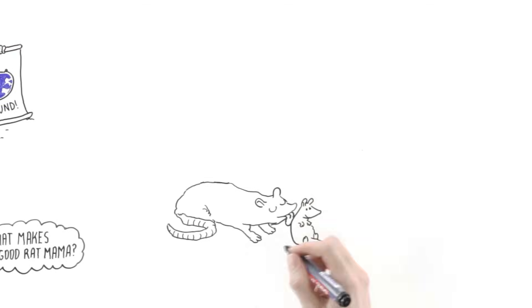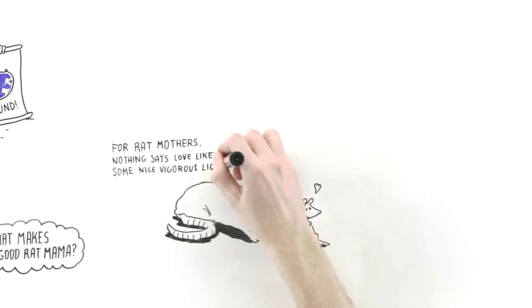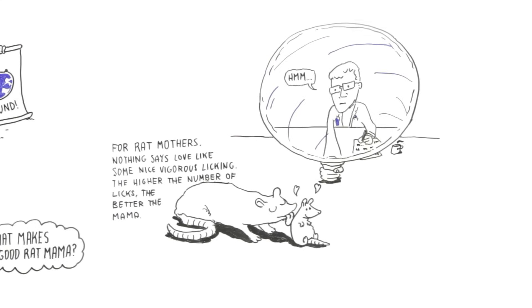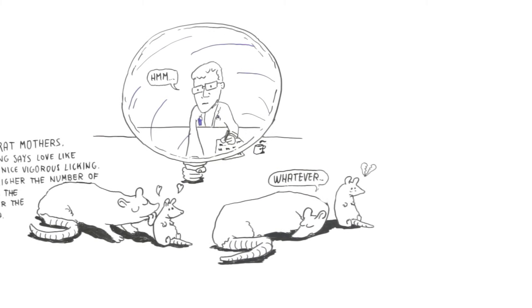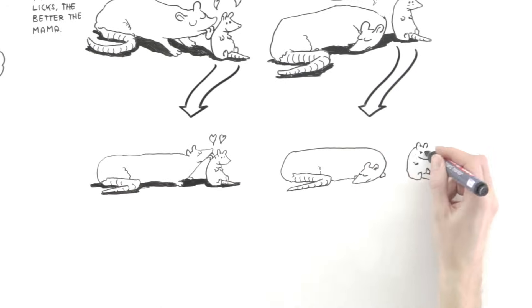Well, for a rat mother, nothing says love and care like some nice, vigorous licking. The higher the number of licks, the more love and the better the mama. With this in mind, the researchers compared two groups of rat mothers. One that licked their babies a lot and another that didn't. They found that when babies grew up, they carried their mama's behavior with them.